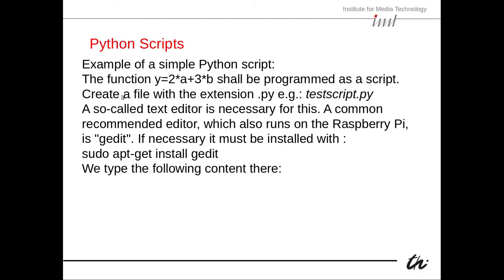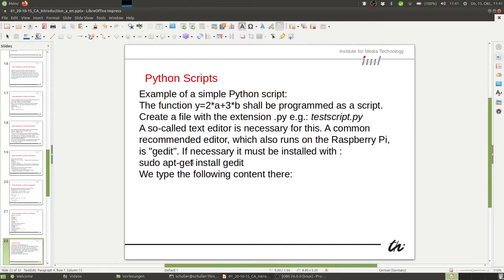Here's an example of a simple Python script. We have the function y equals 2a plus 3 times b, programmed as a script. For that we create a file with the extension .py, for instance 'testscript.py'. We need a text editor — not Microsoft Word, which stores more than just the characters, but an editor that only stores what you type. I usually use gedit, which is standard in Ubuntu and can be installed on other Linux systems with 'sudo apt install gedit'.